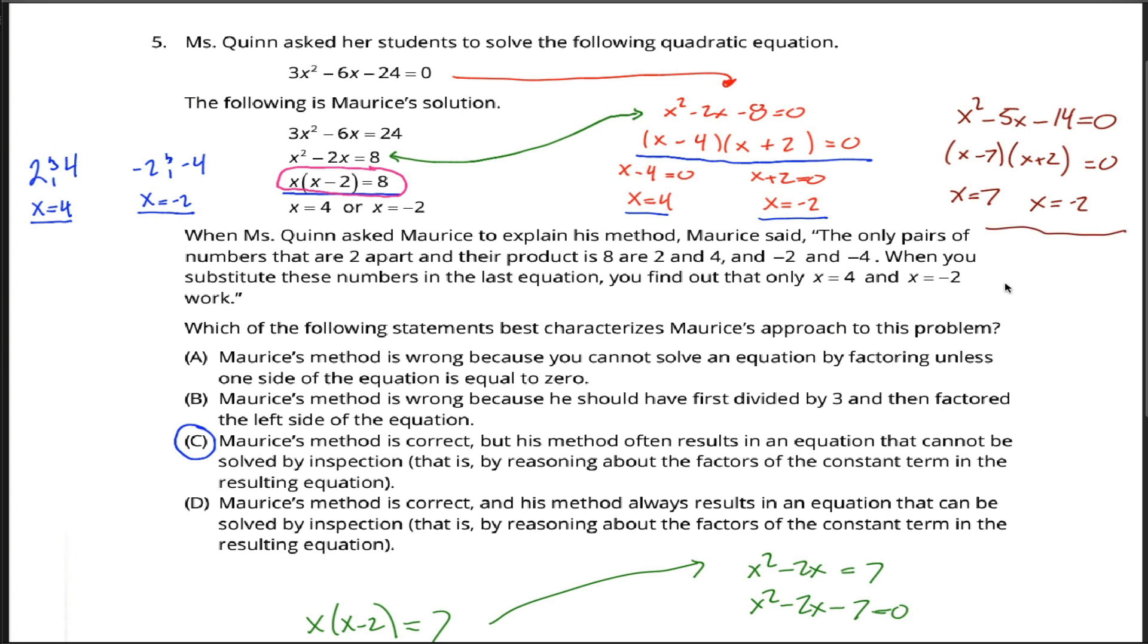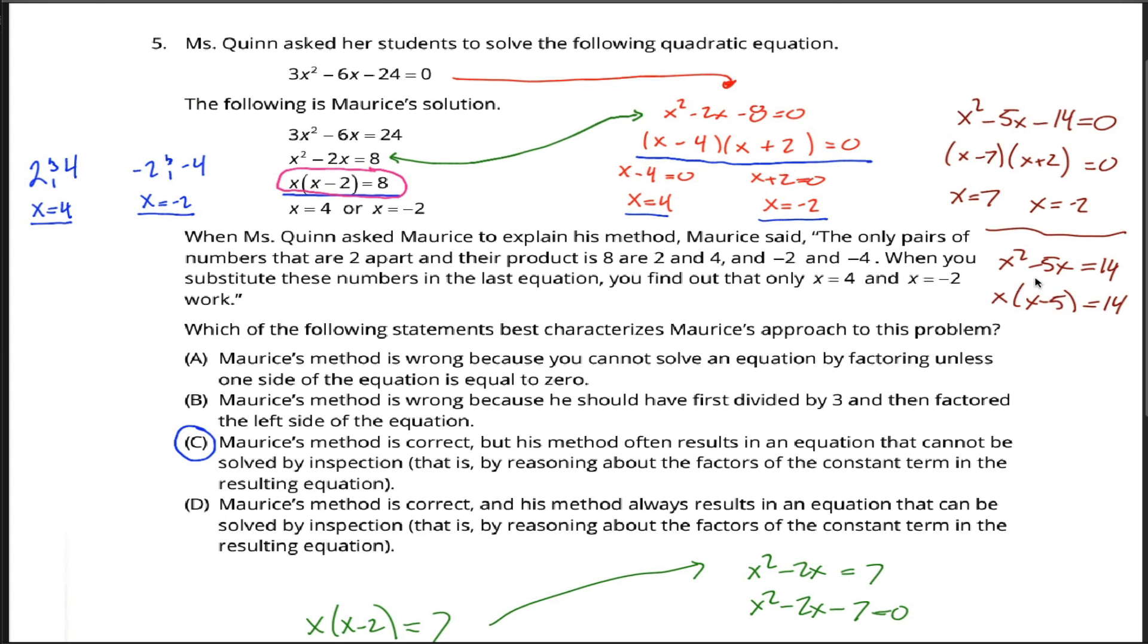Maurice would be like, hey, good job, but check this out. I could make it x squared minus 5x equals 14 and then factor an x on the left side, and now all I got to do is find two numbers that are different by five so that when I multiply those two numbers, I get 14 as my answer. What two numbers work? Well, let's see, seven and two would be one pair.